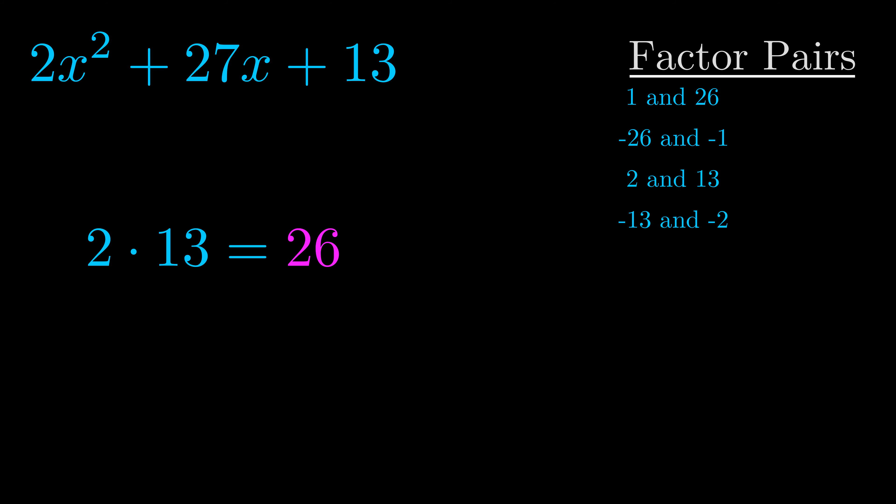The b value is the coefficient on the x term. That's the middle term, the one that we haven't done anything with yet. And really this is the only factor pair that we need.